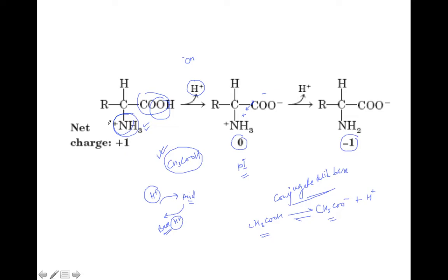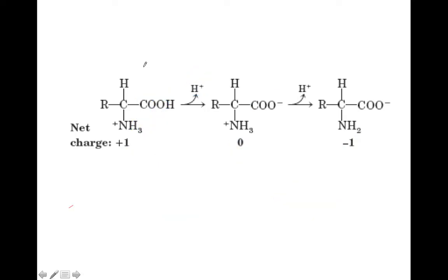At lower pH, the charge on the amino acid would be plus one. Why? Because at low pH, the acid behaves like a base and accepts hydrogen — the COOH group is occupied and the NH₃⁺ is occupied, so the charge is positive. As we keep on adding hydroxyl ions, the carboxyl group starts behaving like an acid and donates an H⁺. So at low pH, all amino acids will be positively charged.